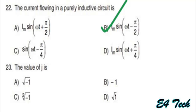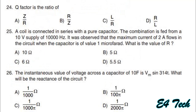Next: the value of j. j² = −1, therefore j = √(−1). Option A. Next: Q factor is the quality factor, defined as the ratio of Z by R. Option A.